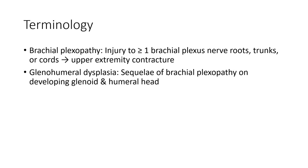Terminology: brachial plexopathy is a collection of injury to more than one brachial plexus nerve root, trunk, or cord, leading to upper extremity contracture, glenohumeral dysplasia. Circular or brachial plexopathy are developing glenoid and humeral head changes.